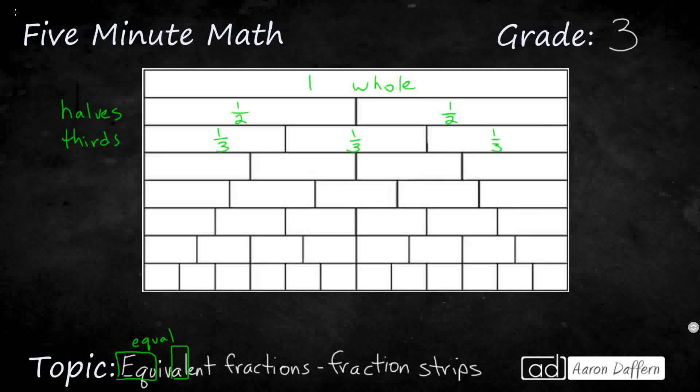Now, there are no equivalent fractions between the halves and the thirds because these lines right here don't go to the same spot. So that's what we're looking for. Do we see lines kind of going out to the same distance? We don't see any.